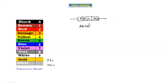If you see a four-color band resistor with colors A, B, C, and D, where the last color is gold or silver, we use the formula: ABC × 10^D, where D is the multiplier. Like this, we calculate the value of a particular resistor.